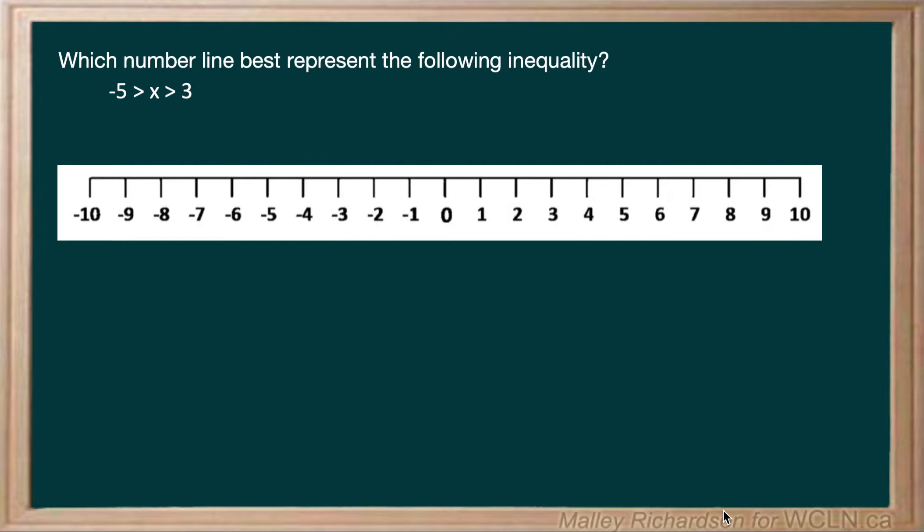Which number line best represents the following inequality? x is less than negative 5 and greater than positive 3.